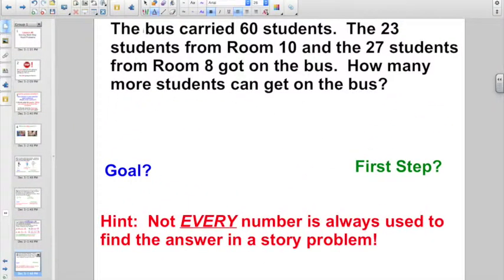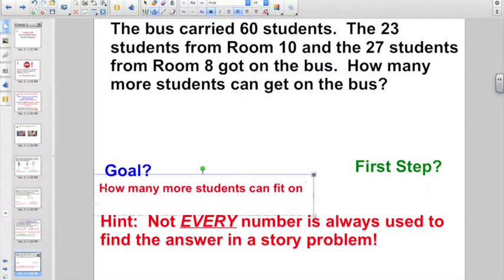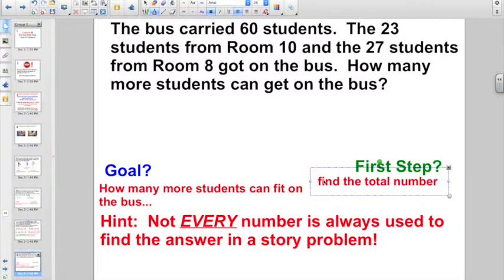Check out this one. Here it's telling us, The bus carried 60 students. We all see that picture in our mind. We all know what a school bus looks like. It's got to be a big bus if it's holding 60 kids. The 23 students from room 10 and the 27 students from room 8 got on the bus. You've got that picture in your mind. Now they're asking us, How many more students can get on the bus? So, ultimately, our goal is to find out how many more students can fit on the bus. But the first step is going to be find the total number of students on the bus already. And here's a hint. Not every number is always used to find the answer in a story problem.